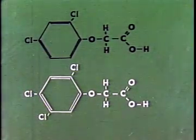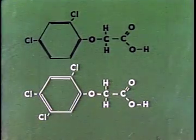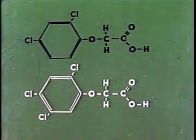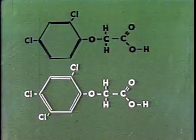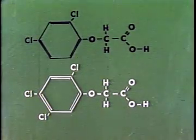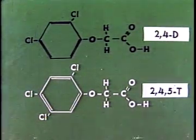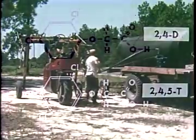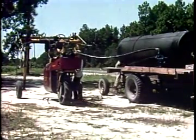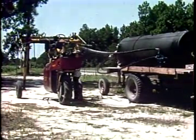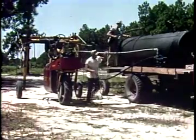These are the structural formulas for 2,4-dichlorophenoxyacetic acid and 2,4,5-trichlorophenoxyacetic acid, commonly known as 2,4-D and 2,4,5-T. From these chemicals are made a large number of closely related compounds, which are sold commercially for weed and brush control.